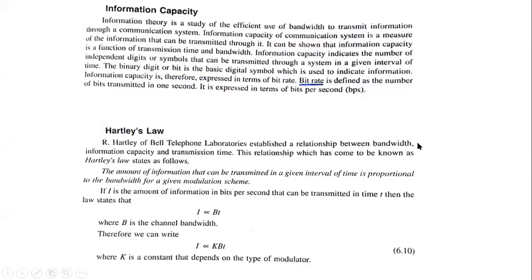When we talk about information capacity, we are talking about bandwidth, bit rate, and how much information — in terms of digits and symbols — can be transmitted through the channel. For that, two laws have been considered: Shannon law and Hartley law.